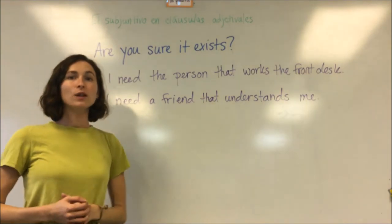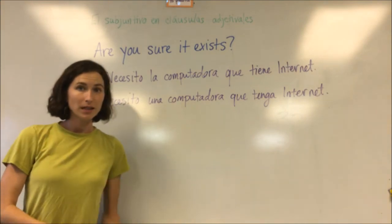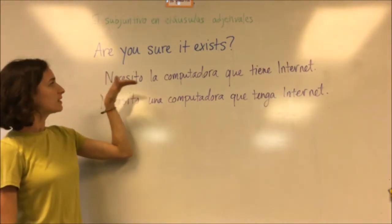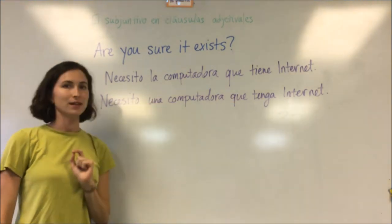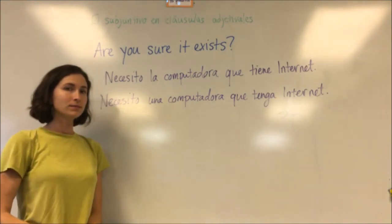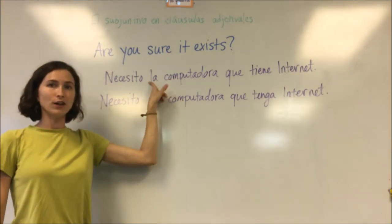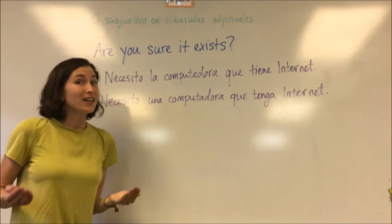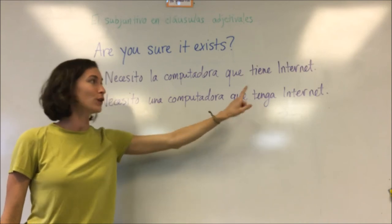In Spanish, it would look something like this. In both sentences, we talk about a computer with internet, but in one we are sure it exists and in the other we are not. We have 'necesito la computadora que tiene internet' and 'necesito una computadora que tenga internet.' The first one definitely exists — we see 'la,' the definite article — whereas the second sentence uses 'una,' an indefinite article. If we're indefinite, it may or may not exist, so we use the subjunctive after the word que.